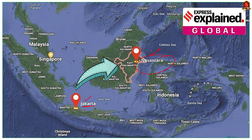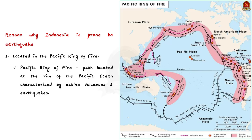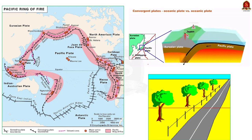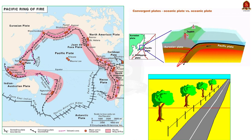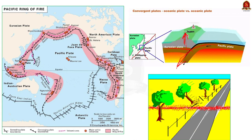Why is Indonesia vulnerable to earthquakes? The first reason is that it is located in the zone of the Pacific Ring of Fire — a zone in the Pacific Ocean characterized by active volcanoes and earthquakes, due to the movement of tectonic plates. A tectonic plate is a massive, irregularly shaped slab of solid rock generally composed of both continental and oceanic lithosphere. Whenever one tectonic plate moves under another, or when plates meet, either earthquakes or volcanic eruptions occur. In the Pacific Ring of Fire, more than nine plates meet, including the Eurasian, North American, Cocos, Caribbean, Nazca, Antarctic, Indian, Australian, Philippine and other smaller plates.